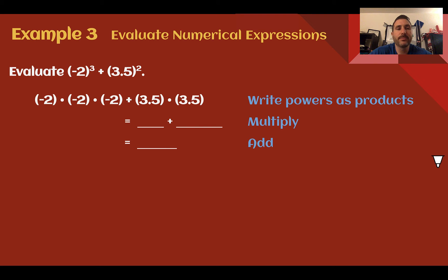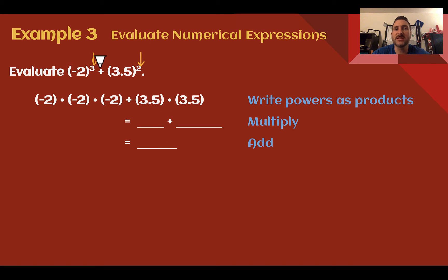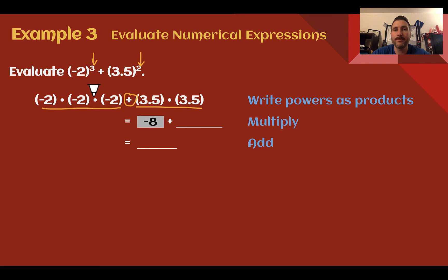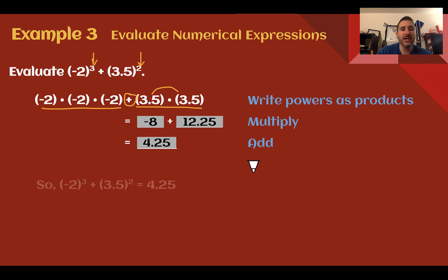Example 3: Evaluate numerical expressions. Evaluate negative 2 to the 3rd power plus 3.5 to the 2nd power. The parentheses mean negative 2 is multiplied 3 times: negative 2 times negative 2 times negative 2. And 3.5 to the 2nd power is 3.5 times 3.5. Following order of operations, multiplication comes before addition. Negative 2 times negative 2 times negative 2 is negative 8. 3.5 times 3.5 is 12.25. Now we can add: negative 8 plus 12.25 equals 4.25.